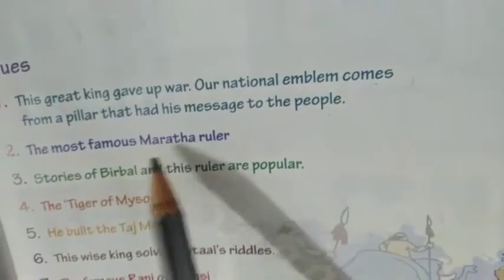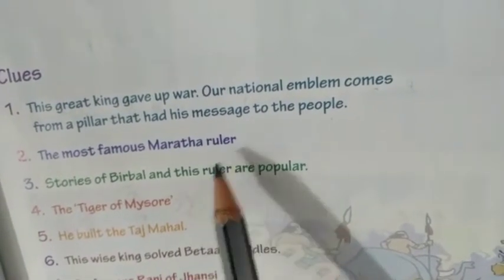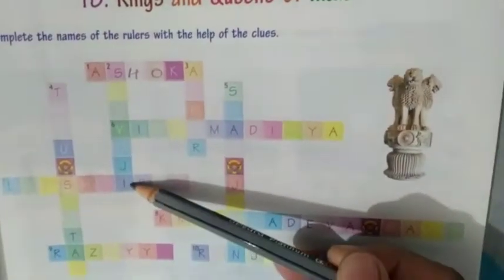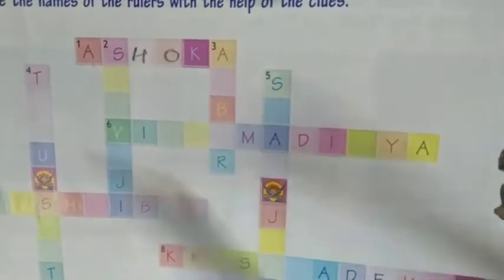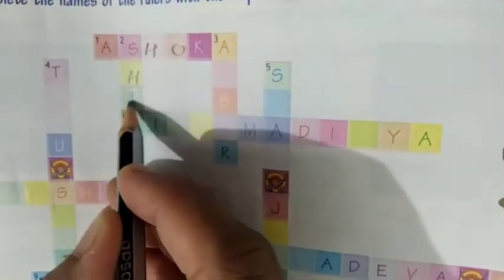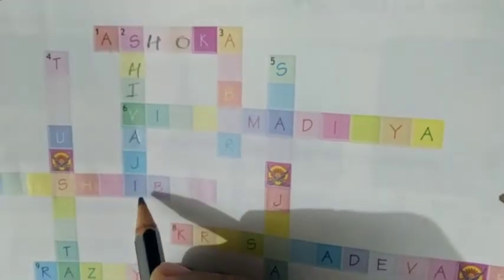Number 2: the most famous Maratha ruler. So where is number 2? Downwards. This is Shivaji — Chhatrapati Shivaji. S-H-I-V-A-J-I.